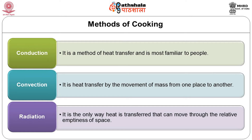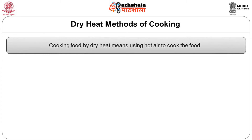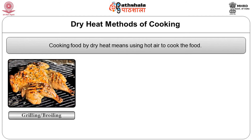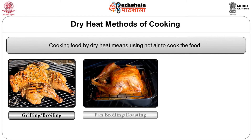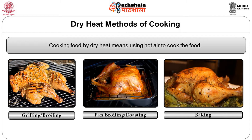Now we shall go to the core of this module on dry heat methods of cooking. Cooking food by dry heat means using hot air to cook the food. The commonly used methods — grilling or broiling, pan broiling or roasting, and baking — use air as the medium of cooking. I will brief you about each method with suitable examples.